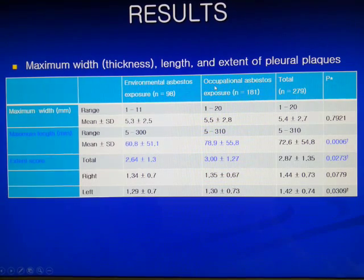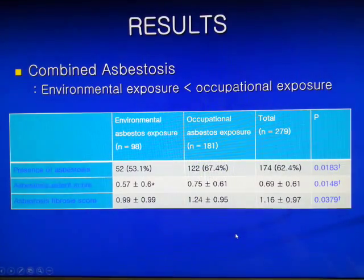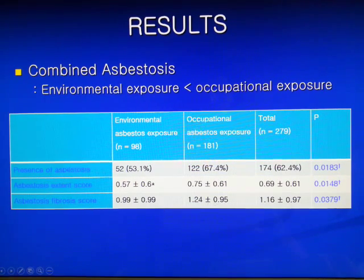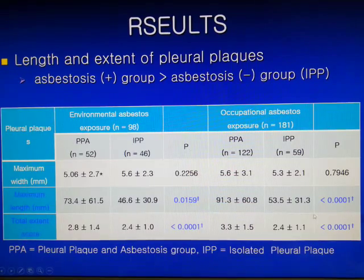Between environmental and occupational exposure groups, there was a significant difference only in maximum length of a plaque and extent score, which were significantly higher in the occupational exposure group, but maximum width showed no significant difference between the two groups. Asbestosis was more commonly combined in occupationally exposed people, and the extent and fibrosis degree of asbestosis were significantly higher in that group. The maximum length and extent of pleural plaques were also significantly higher in groups with asbestosis compared to those with isolated pleural plaques.